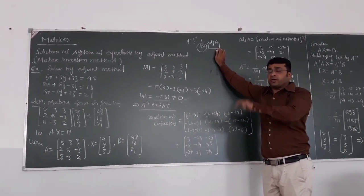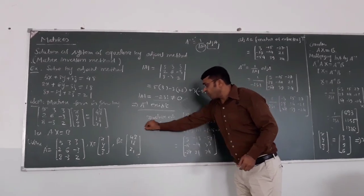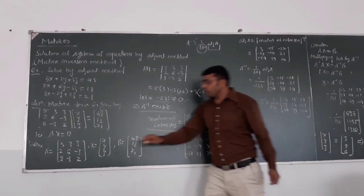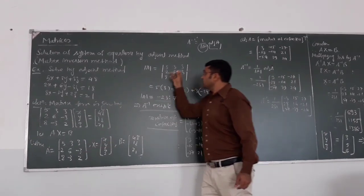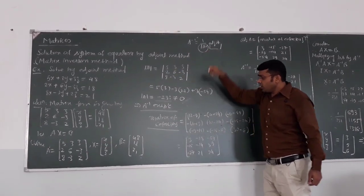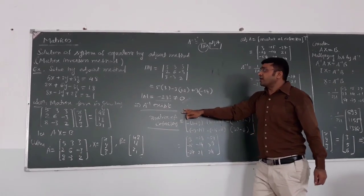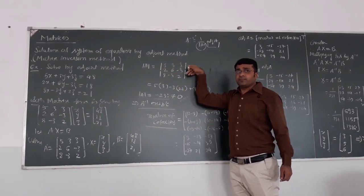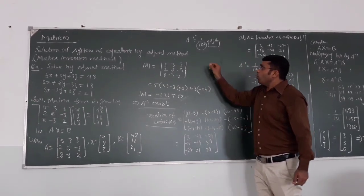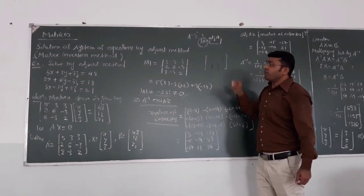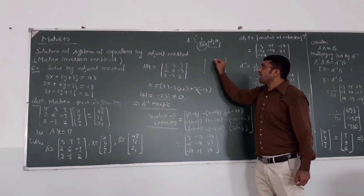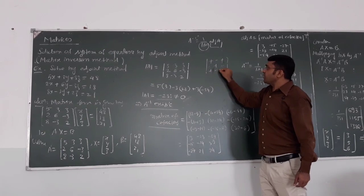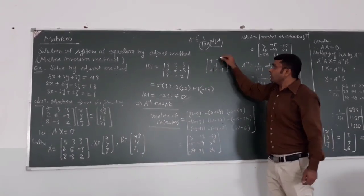To find the cofactor matrix, we calculate the cofactor for each of the nine elements. The sign convention to remember for cofactors is: plus, minus, plus / minus, plus, minus / plus, minus, plus. Using this pattern for each element determines the sign of each cofactor.